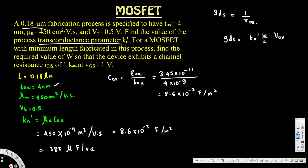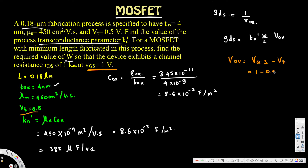We need to calculate VOV to find W. VOV is the overdrive voltage: VOV equals VGS minus V_threshold. VGS is 1 volt (given), and V_threshold is 0.5 volts, so VOV equals 1 minus 0.5 equals 0.5 volts.